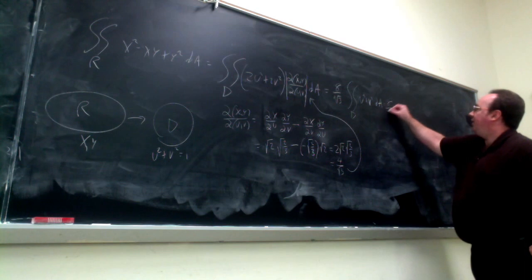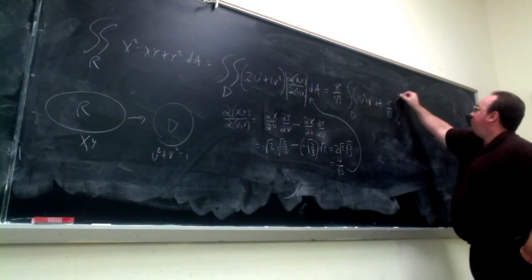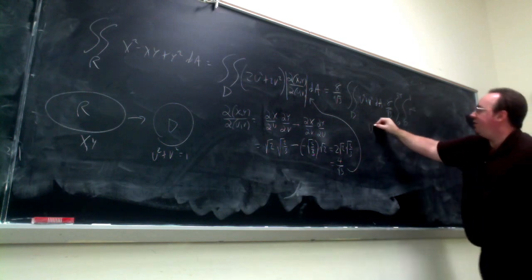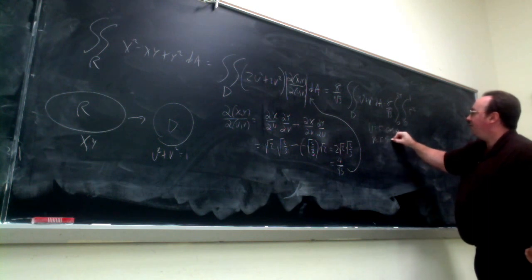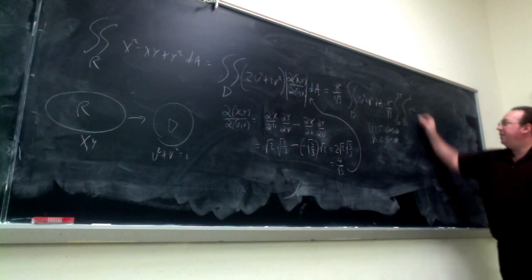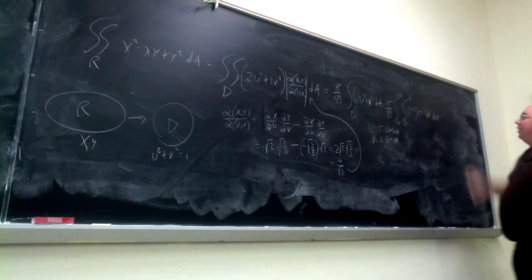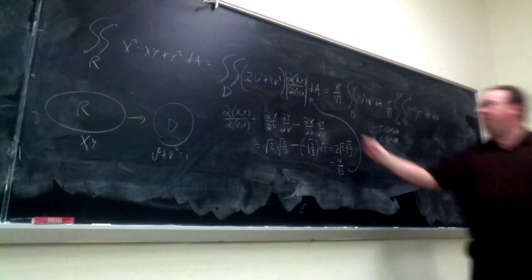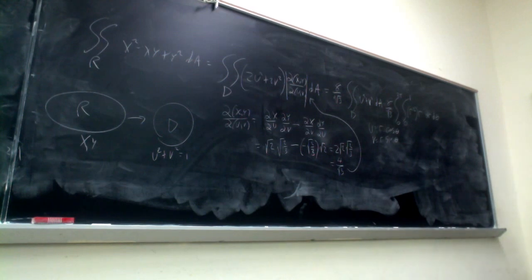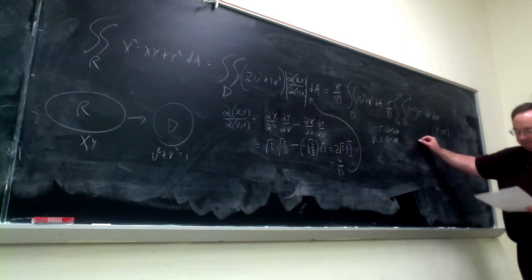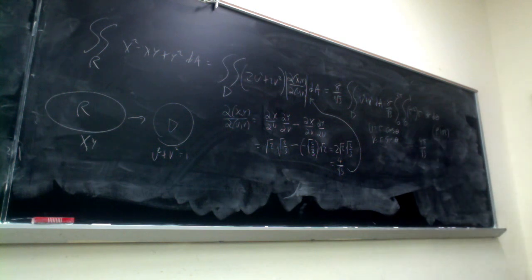Now we apply polar coordinates. That 8/√3 is still there. The integral becomes (8/√3)∫₀²π ∫₀¹ r² · r dr dθ, since u² + v² = r², and the new change of variable is u = r·cosθ, v = r·sinθ. The Jacobian for polar coordinates is just r. From here it's worked out in the notes on page 102, and the final answer is 4π/√3.